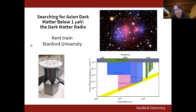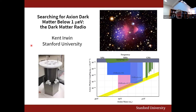We encourage you to ask a lot of questions - Zoom is kind of alienating, and Kent has indicated he's happy for interruptions. Kent begins: 'Thank you, Eva. I'm going to be speaking about searching for axionic dark matter, in particular a range of axion dark matter masses that has not been well probed before - masses below a micro-electron-volt.'